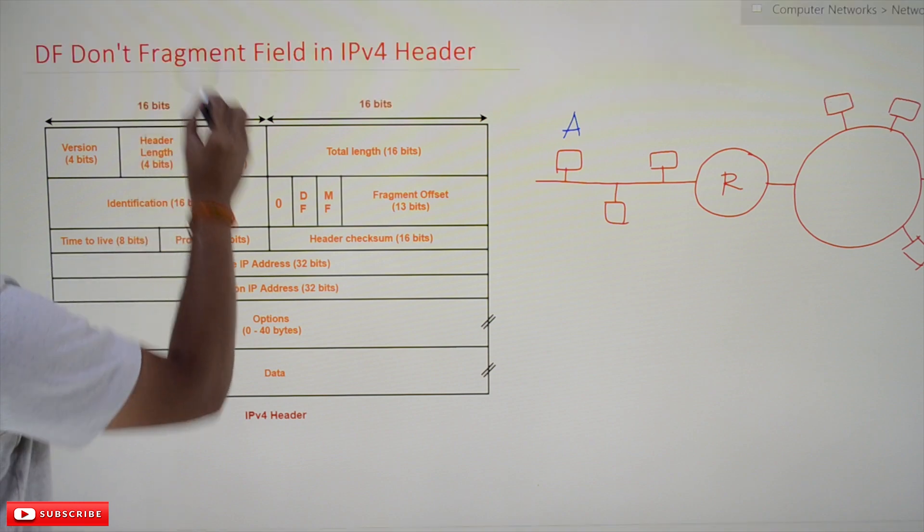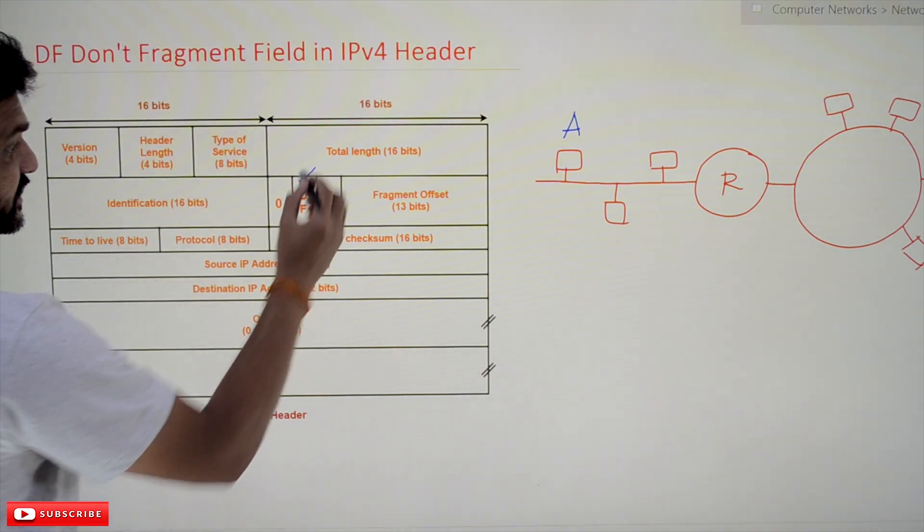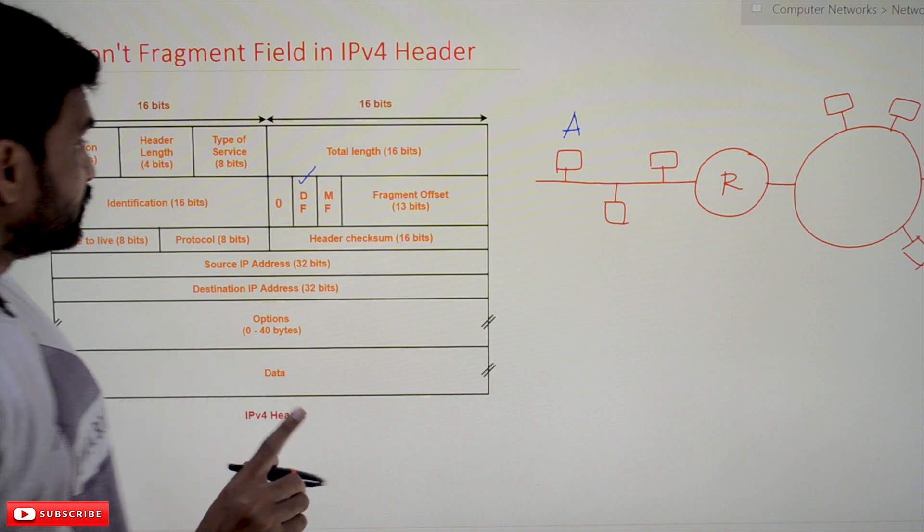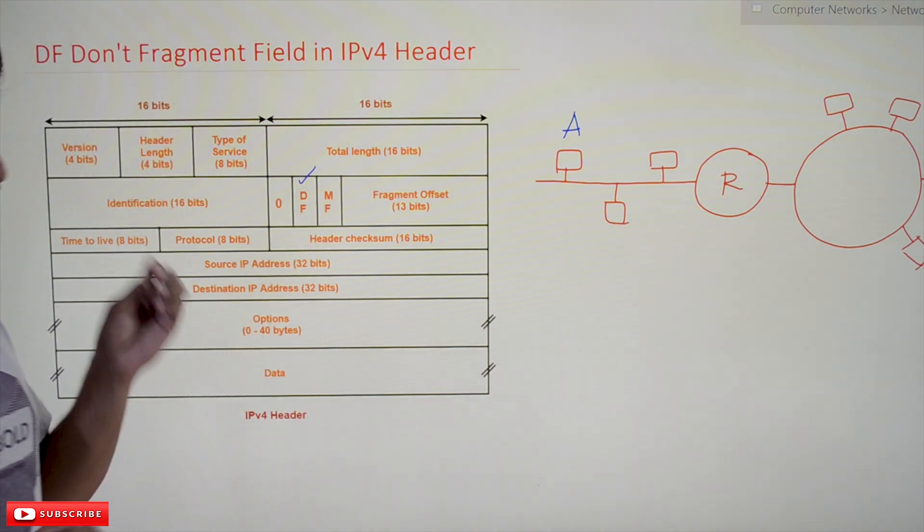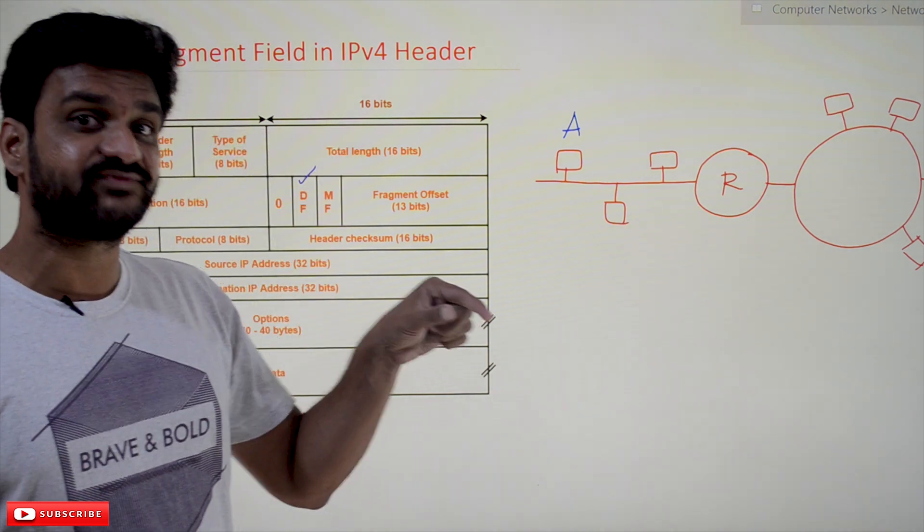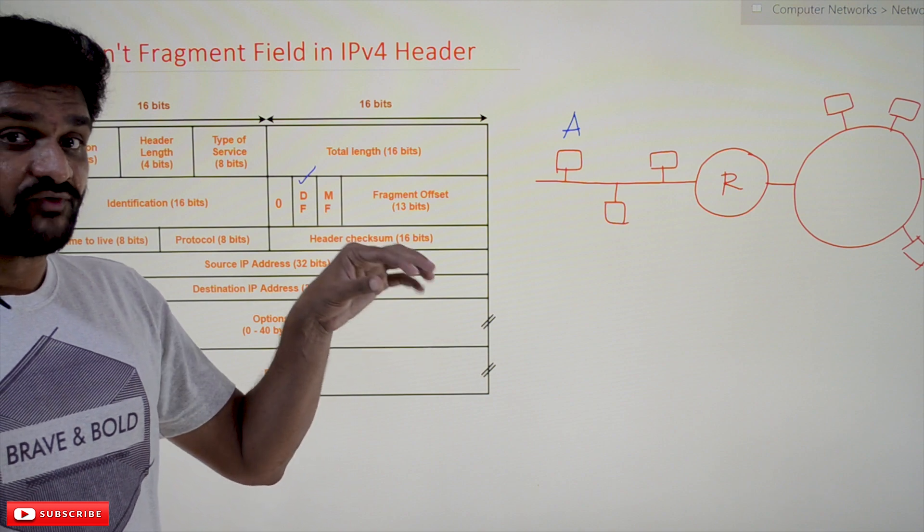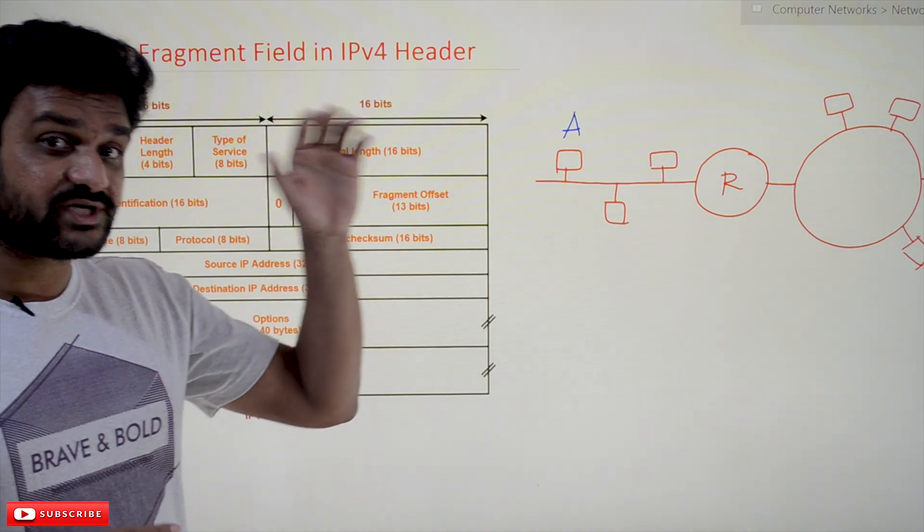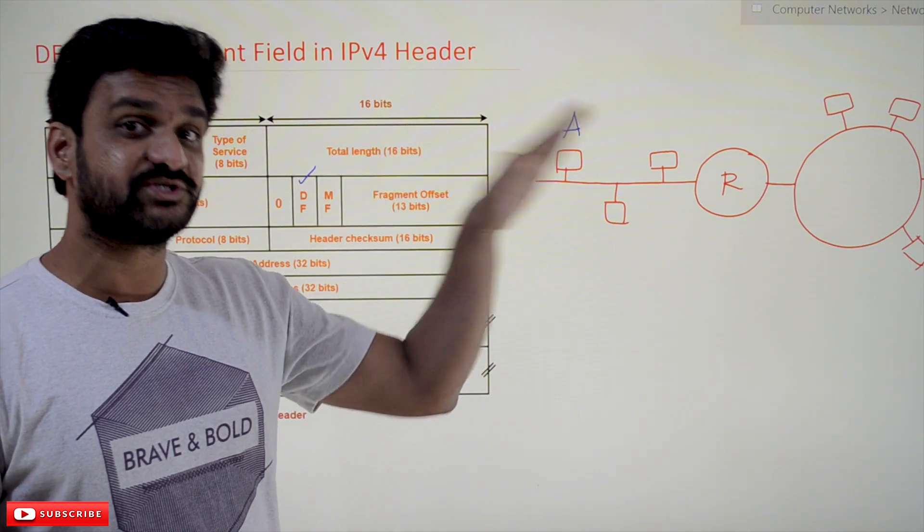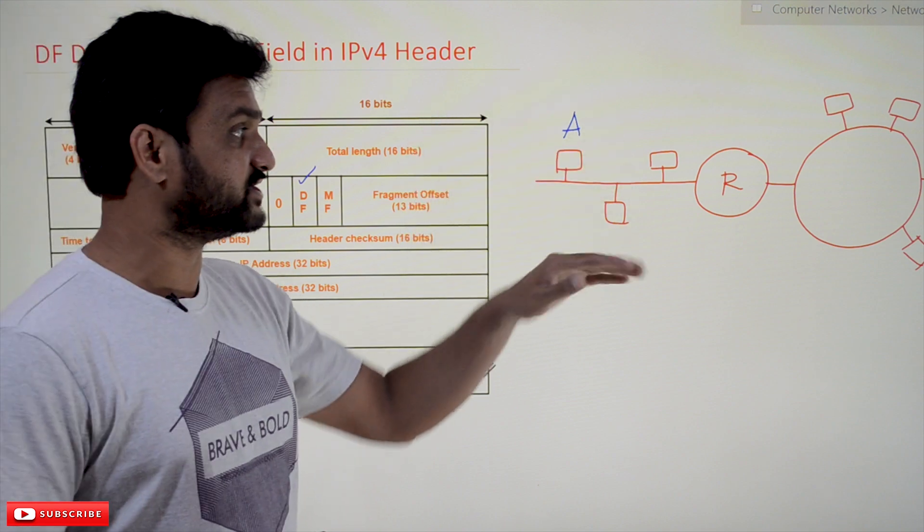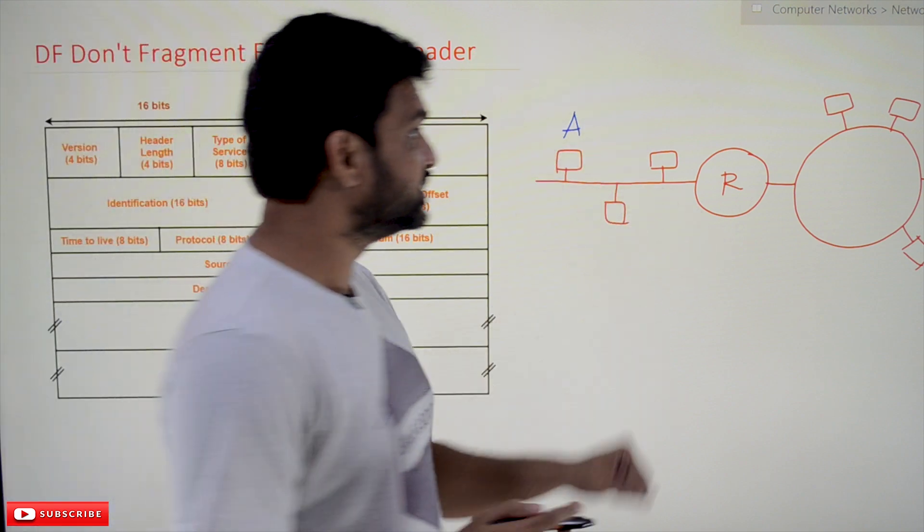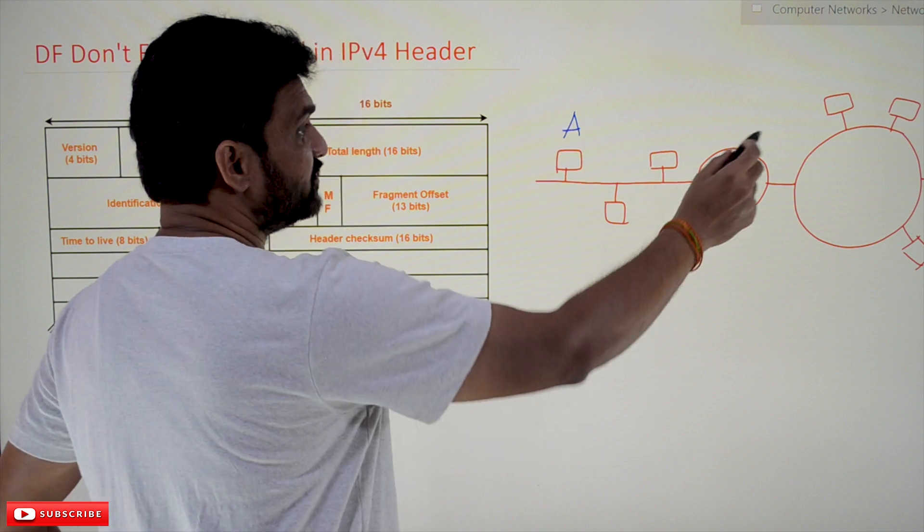This is a one-bit field. What this DF field states is: whenever the sender sets this field as one, the routers in between the transmission of packets from source to destination... To understand this, let's take this network. A wants to communicate with B and has a packet size of, for example, 1000 bytes.